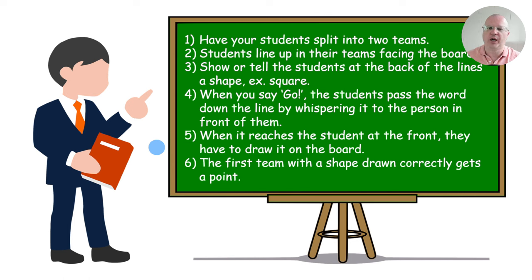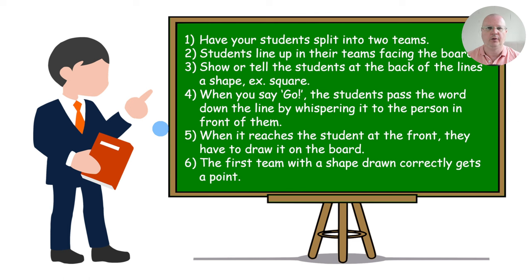This game is also called Chinese Whispers. It's best if you have at least four to five students in each line. If you have a big class of 30 or 50 kids who sit in four rows, you can play this game in the aisle between the rows with maybe seven or eight students per line. It depends on the size of your classroom, but it's a fun game — students love it and it's always a win.